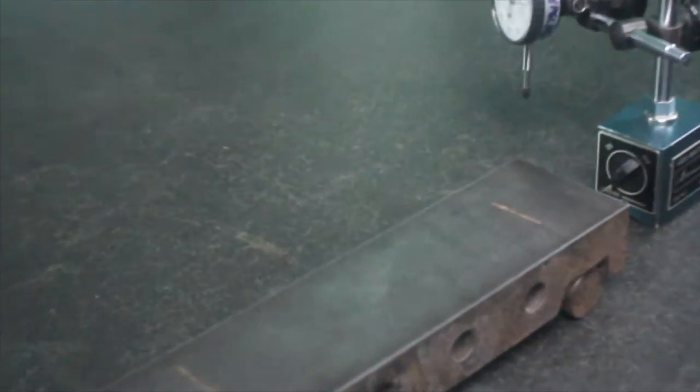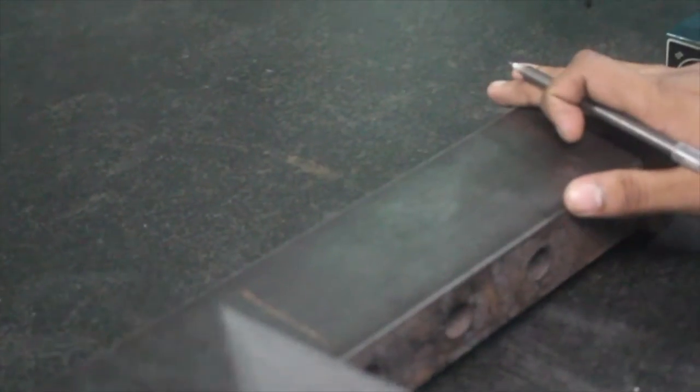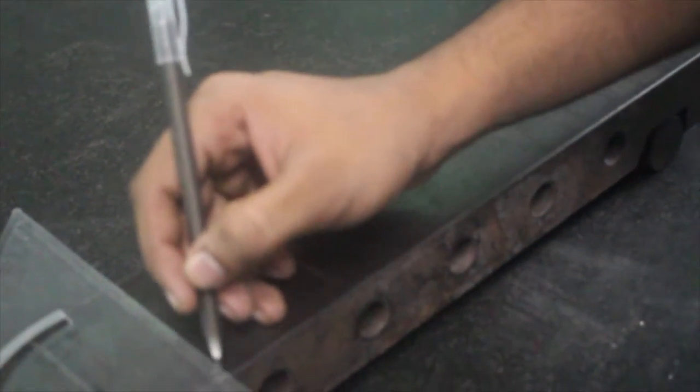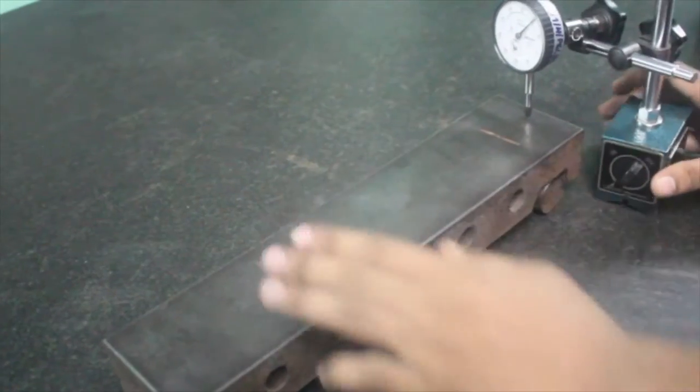First, we will be dividing this particular surface into eight portions. We will be using the pencil and dividing into eight portions. We are arbitrarily choosing some points to find the error of this particular surface.